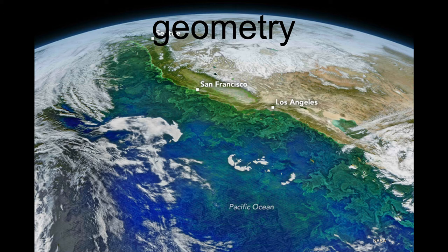The immediate coast — the shoreline — is a linear phenomenon, and everything is concentrated on that. Here I'm illustrating that with some productivity visible as bright green, the greenness in the water.